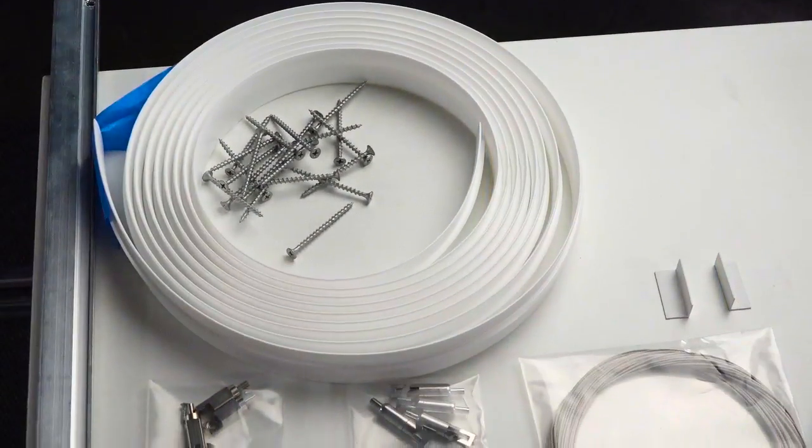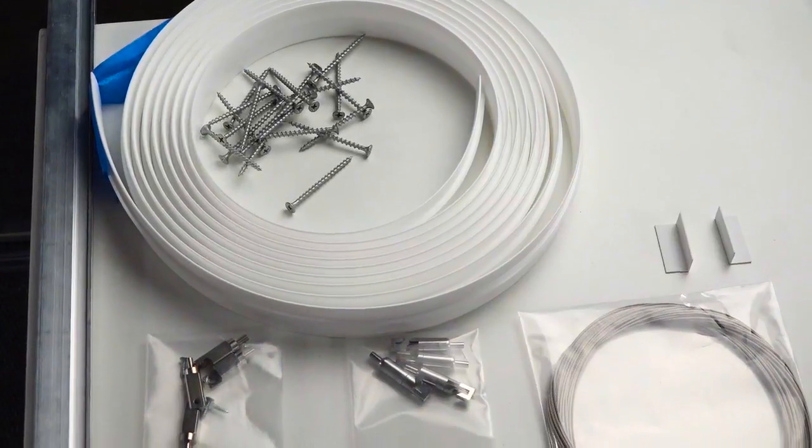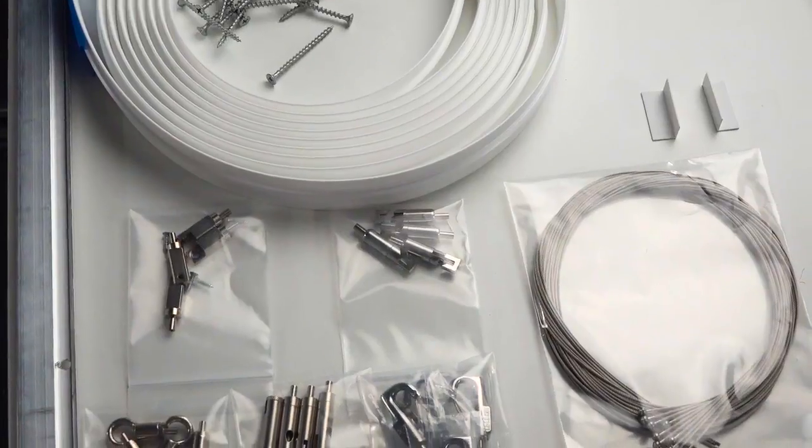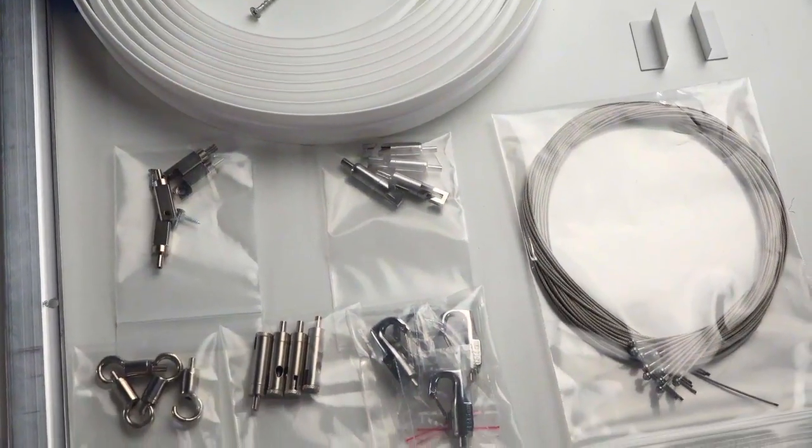The Griplock art system comes with aluminum art track, track cover, number eight screws, cables, grippers of your choosing depending on how you want to mount your artwork, and optional end caps.